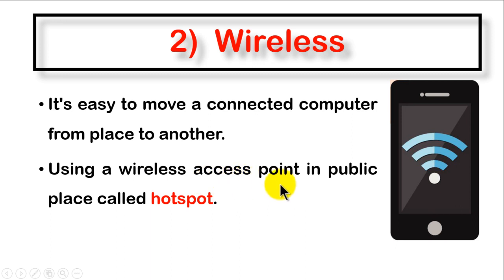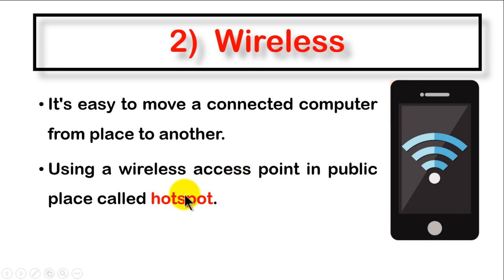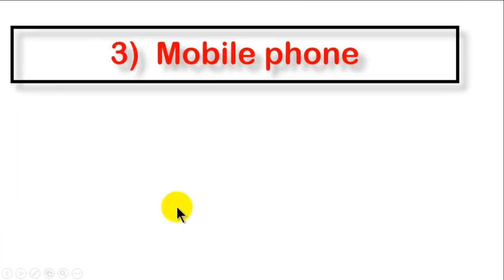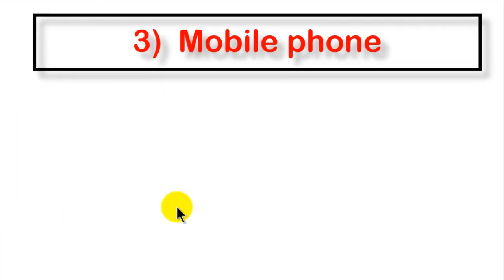When a wireless access point is used in a public place, we call it a hotspot. In some places like restaurants, schools, and universities, they may use a wireless access point in public so that everyone can use their devices to access the internet. In this case, we call those wireless access points hotspots.